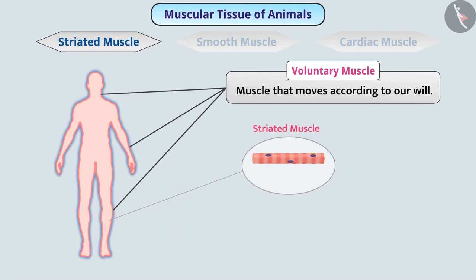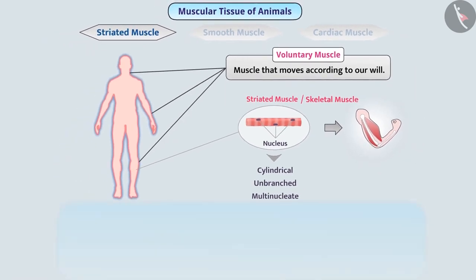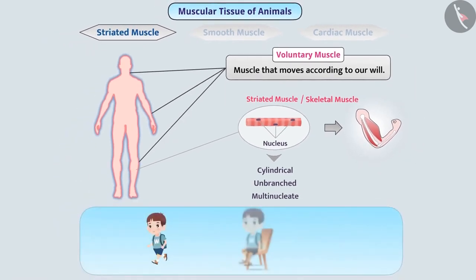The cells of this muscle are long, cylindrical, unbranched, and many nuclei are present in them — hence these cells are multinucleate. This muscle is usually associated with bones, so it is also called skeletal muscle. It helps in body movements and maintains the posture and position of the body.